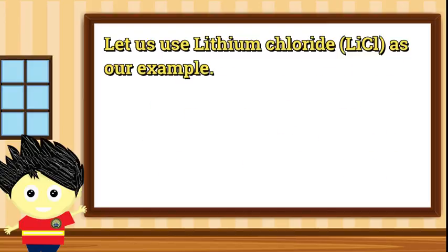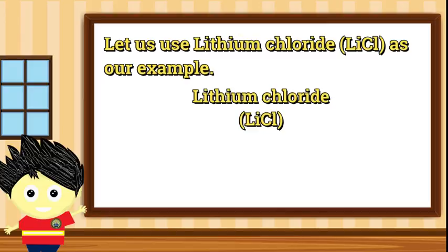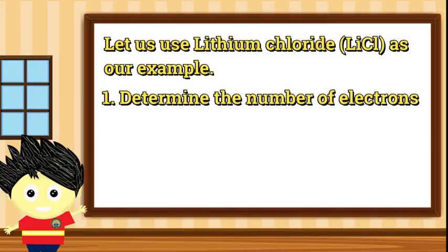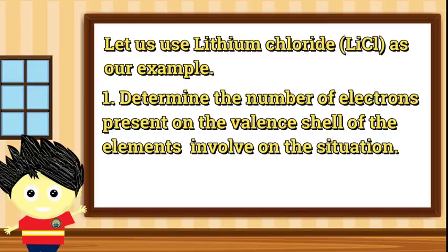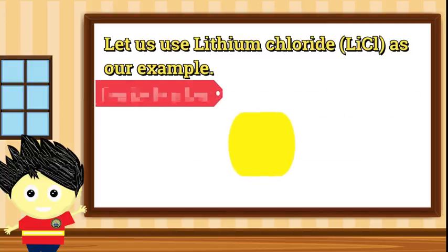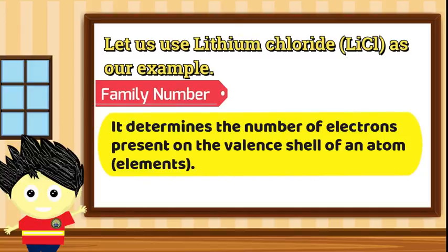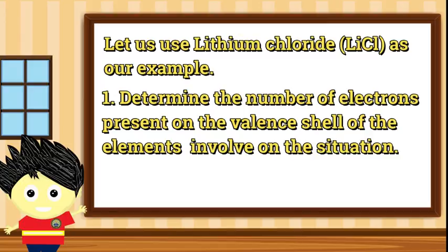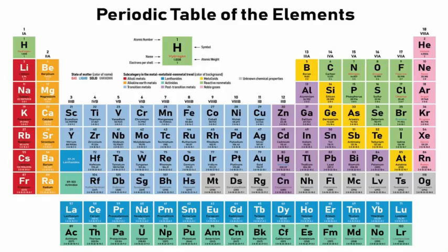Ipakita natin gamit ang compound na lithium chloride. Ang compound na ito ay binubuo ng dalawang elements — ito ay ang lithium at chlorine. Una, upang makuha natin ang electron sa valence shells ng mga elements involved sa compound na ating gagamitin, kailangan muna nating alamin kung saan ang family o group number ang mga ito nabibilang. Para mas madali nating maintindihan, mas maganda kung may hawak kang periodic table.